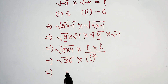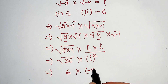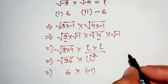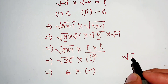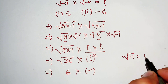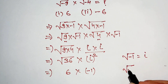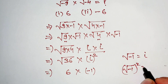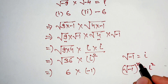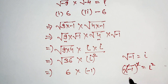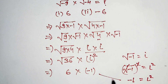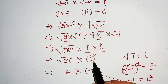Square root of 36 is equal to 6, and iota square is equal to negative 1. Because if we take square root of negative 1 equal to iota and we square this number, the square will cancel out the square root, giving negative 1 equal to iota square. So the value of iota square is negative 1.